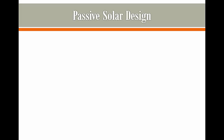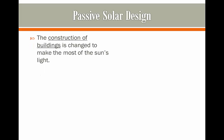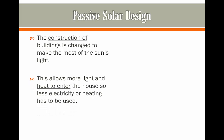First we'll look at passive solar design. The construction of buildings is changed to make the most of the Sun's light. As a result, we're going to be using the Sun's energy to heat up the house without having to use other types of energy. This allows more light and more heat to enter the house, and less electricity and heating is going to be used.